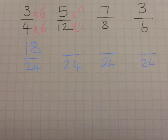Because the rule is, what you do to the bottom, you do to the top. And what you do to the top, you also do to the bottom. So, 5 times 2 is 10.